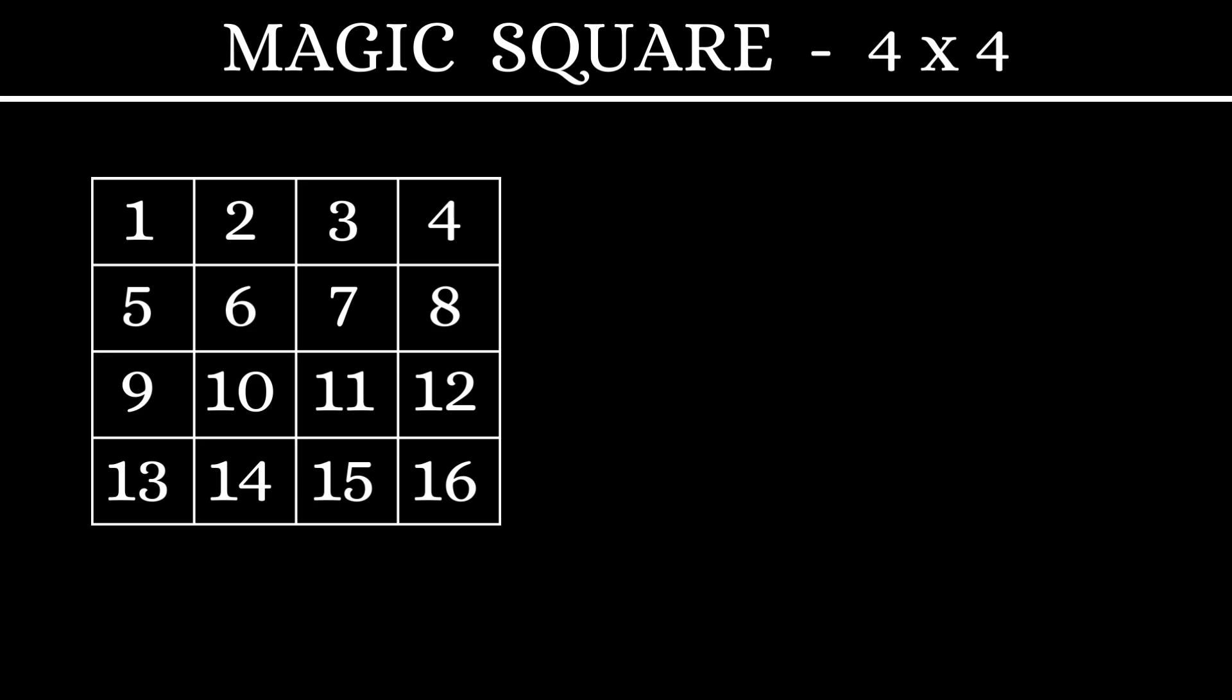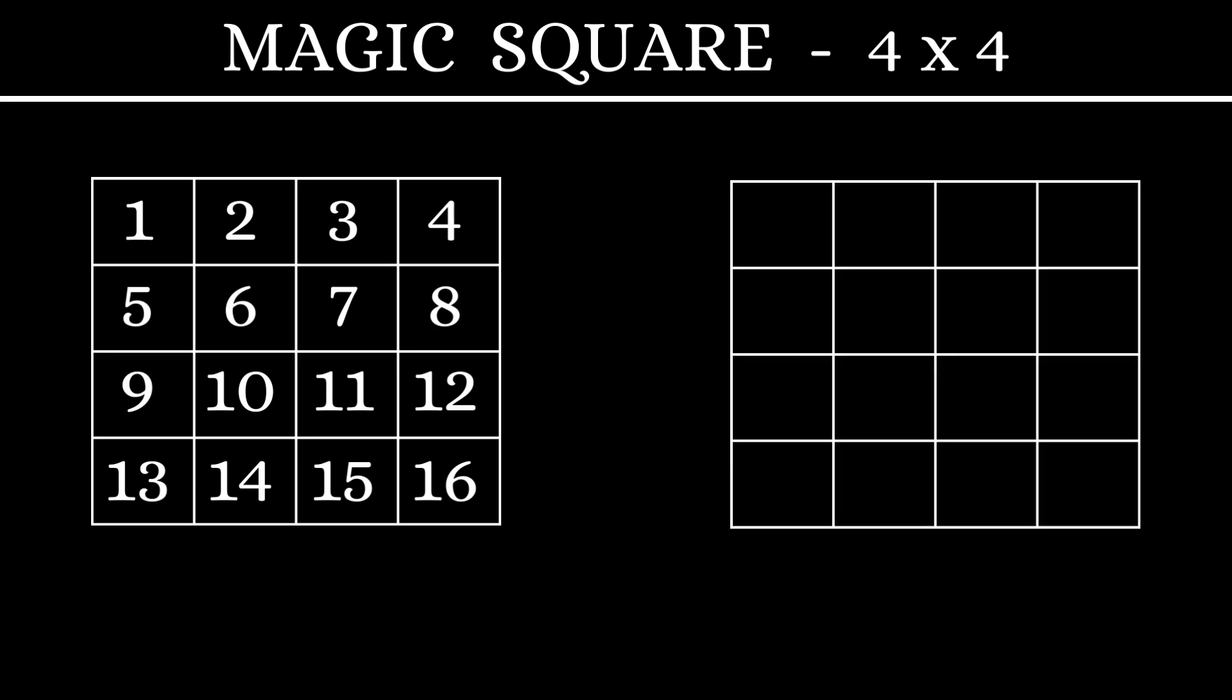we'll construct our magic square. As a first step, we'll write the numbers in the 4 corners as it is. 1, 4, 13, and 16.